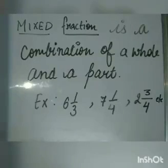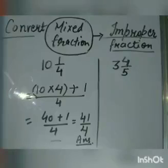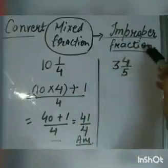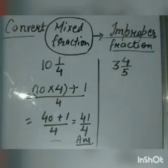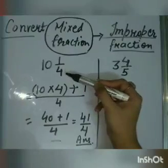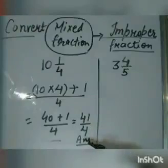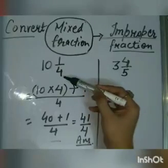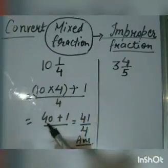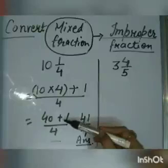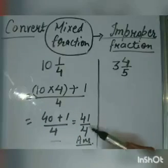You can write more examples by yourself. After understanding the definitions of proper fraction, improper fraction, and mixed fraction, let us understand how to convert a mixed fraction into an improper fraction. For example, 10 and 1 by 4. This is a mixed fraction. The whole part is multiplied with the denominator: 10 multiplied by 4 equals 40, and then add the numerator 1. So 40 plus 1 equals 41 upon 4.